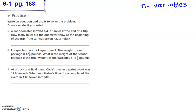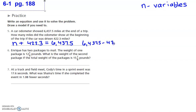Let's look at this first one. It says a car odometer — that shows you how many miles you've traveled over a long distance. A car odometer showed 6,437.5 miles at the end of a trip. How many miles did the odometer show at the beginning of the trip if the car was driven 422.3 miles? You actually have two ways you could solve this. What this is showing us is that we have some number of miles we started with, added 422.3, and ended up at 6,437.5.